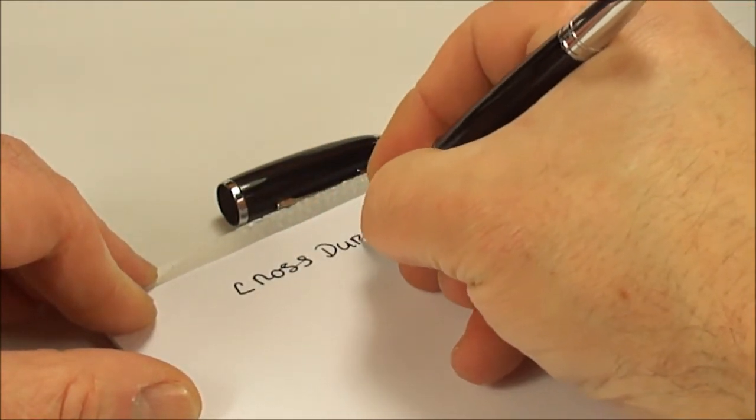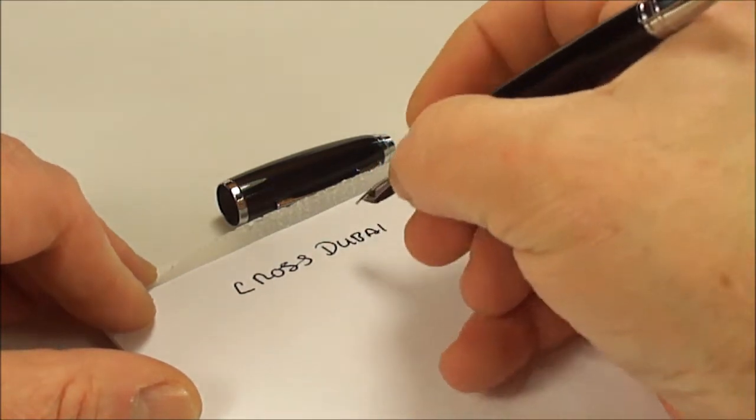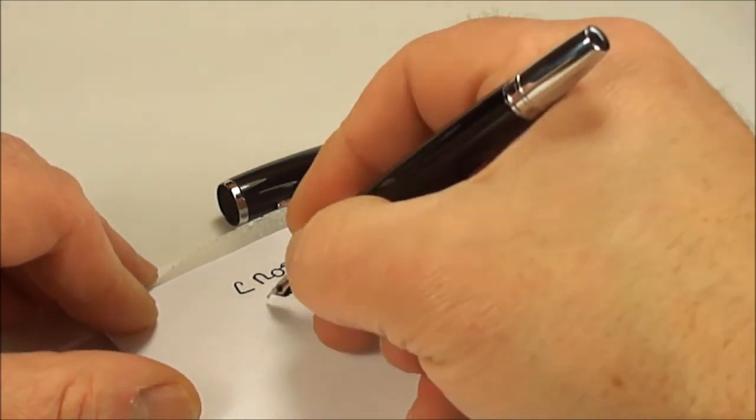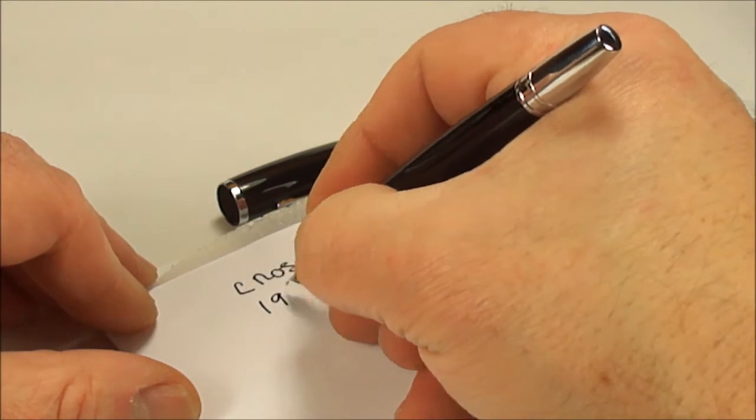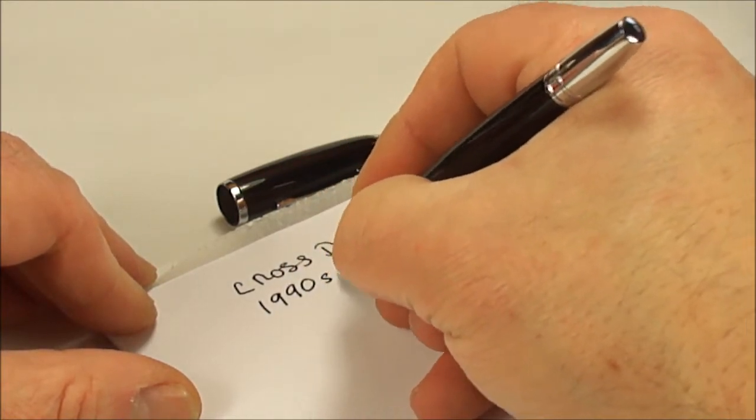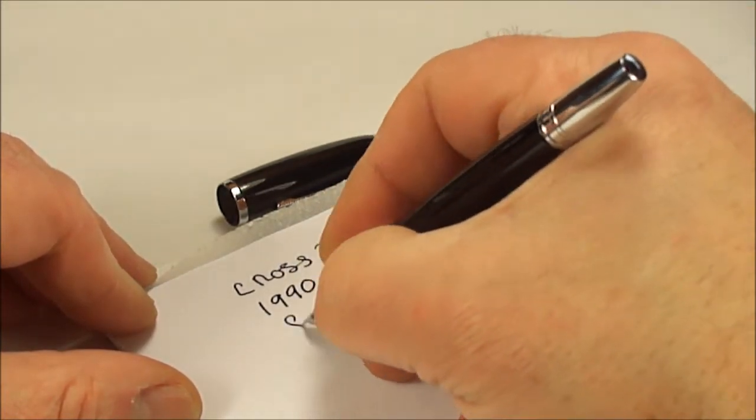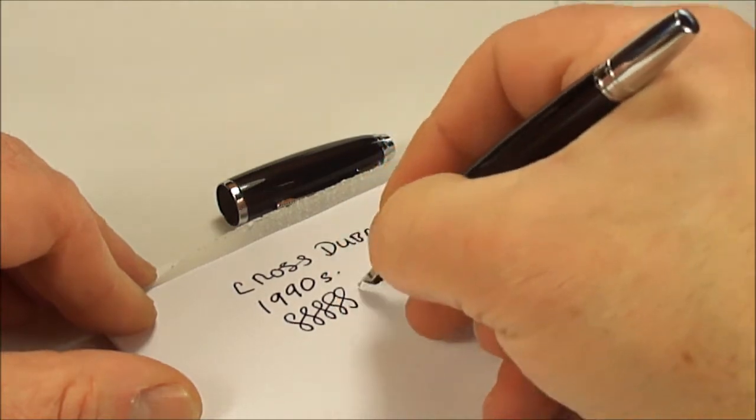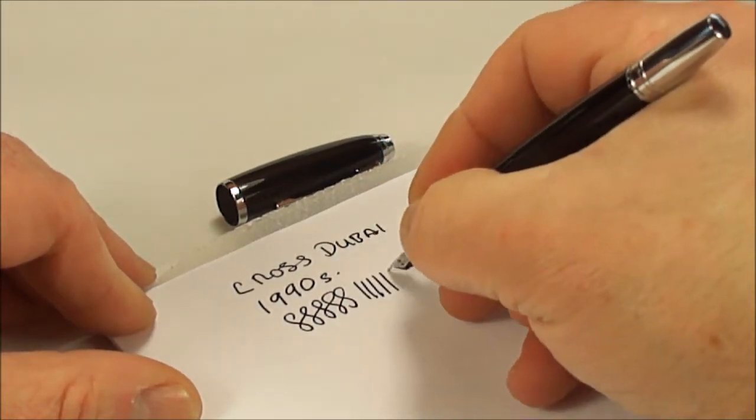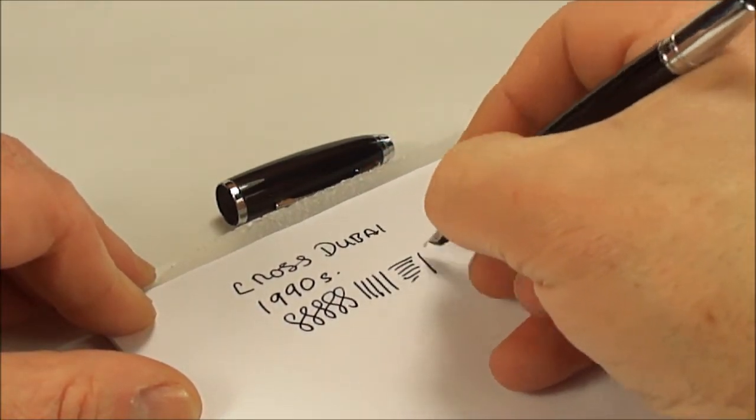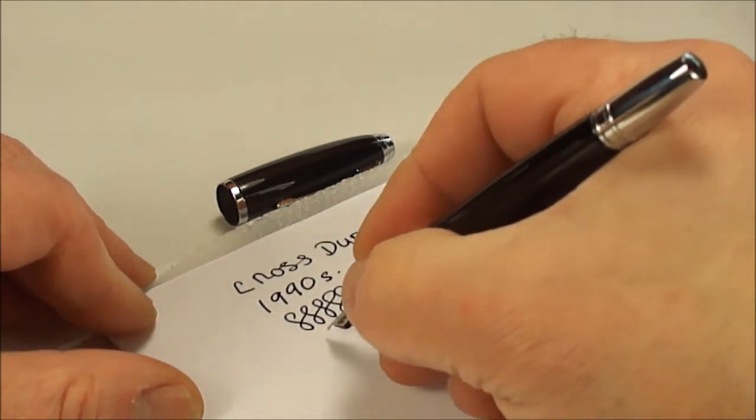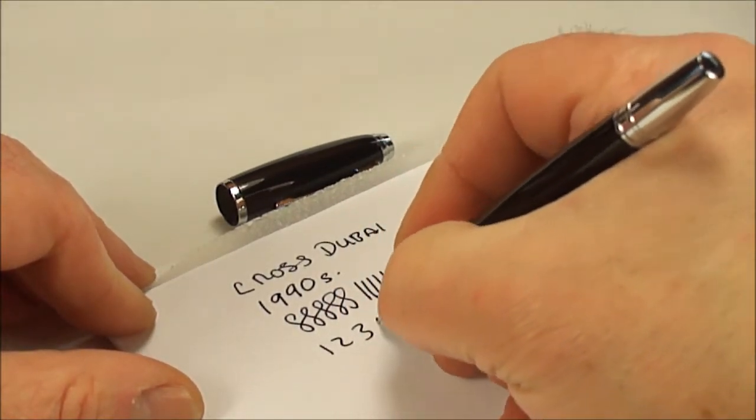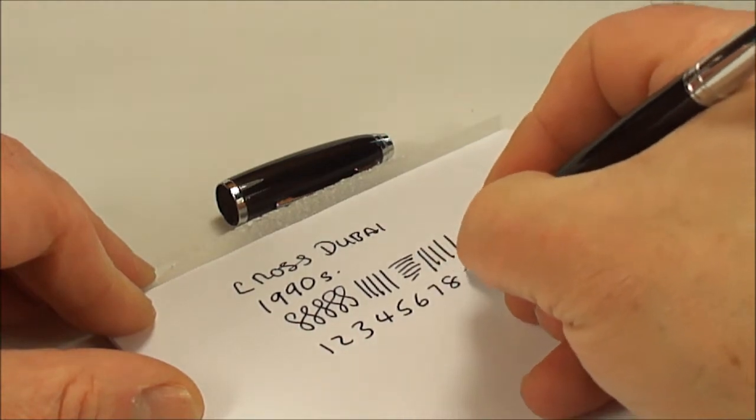This one is the Dubai. I don't know what date it is, to be honest. I'm going to just say the 1990s. I don't believe it's actually still available, so I think it's actually a discontinued model. It's writing with a medium, a medium line. And to be perfectly honest with you, it's actually a very nice writer.